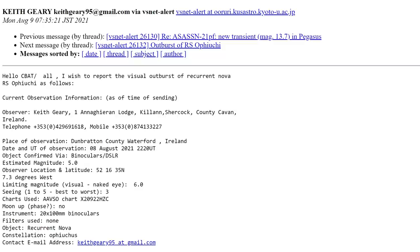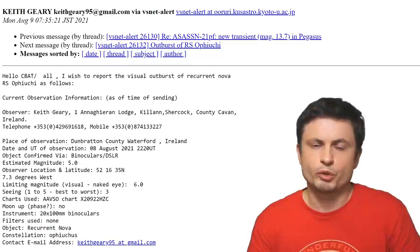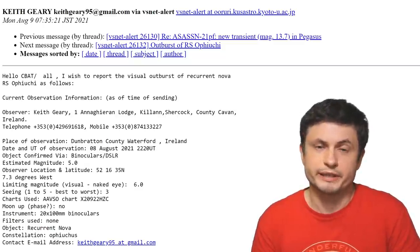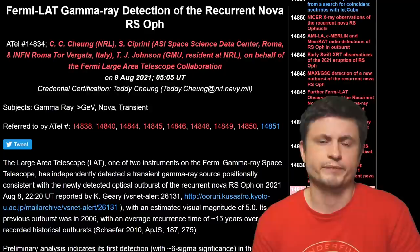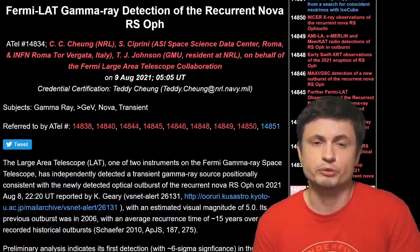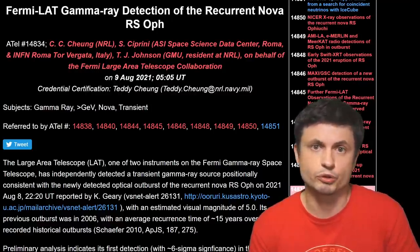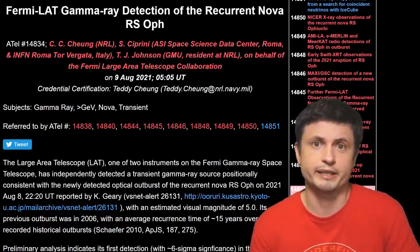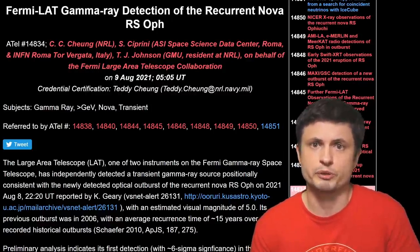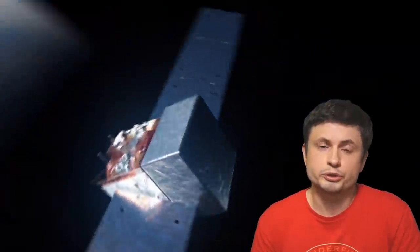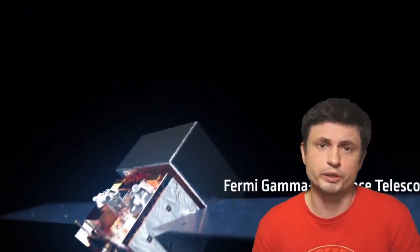Keith Geary, who caught it on the 8th of August, with the nova itself reaching the peak magnitude the day after, on August 9th. And pretty much right away, everyone jumped on trying to analyze what's happening here. For example, his visual observations were almost instantly confirmed by the gamma-ray observations from the Fermi telescope. Something that is usually done when we detect a new nova or a new supernova.